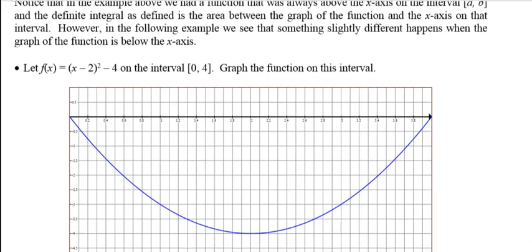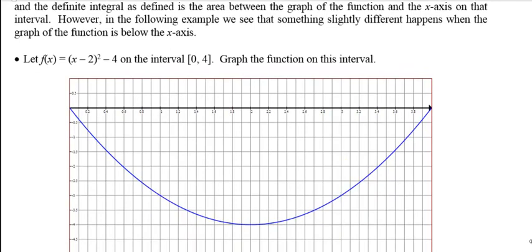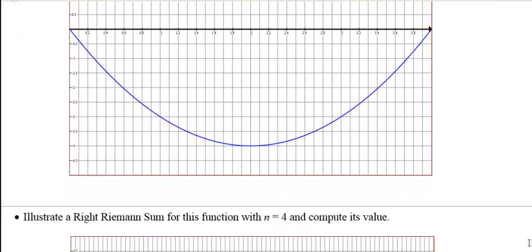Alright, the graph looks like this. So notice this time the graph is all below the x-axis. And we're going to notice something slightly different happens here. It's very similar but just a slight variation. So let's try to make Riemann sums for this. And let's do R sub 4. Write Riemann sum with 4 rectangles or 4 intervals and compute its value. See if you can do that now yourself. Press pause now.